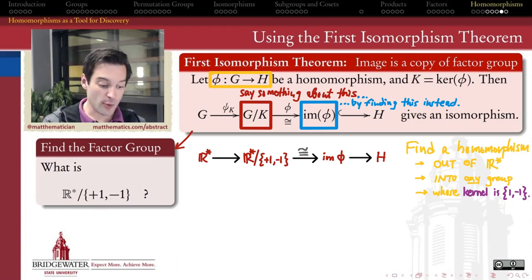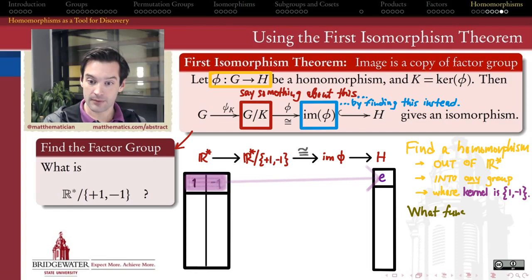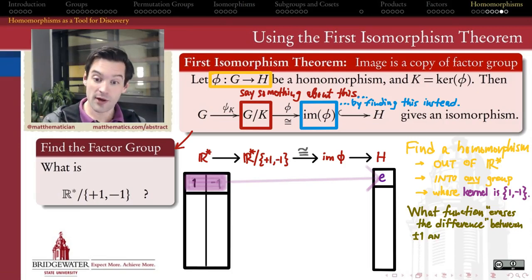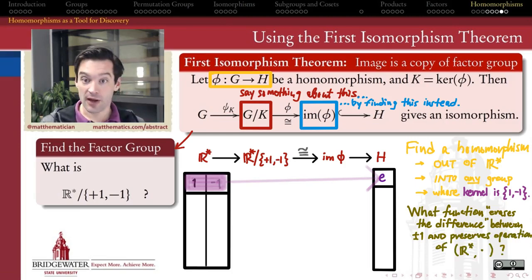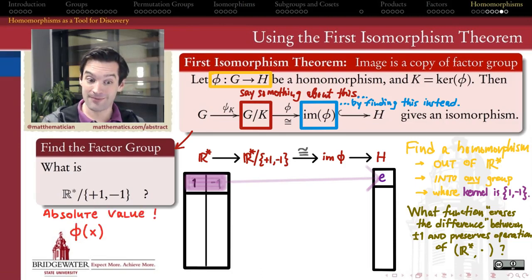How do I find a homomorphism out of the multiplicative group of real numbers that kills exactly the subset {1, -1}? This is almost like a high school algebra question: is there a function that erases the difference between +1 and -1, and which also preserves the operation—meaning phi(xy) must equal phi(x) times phi(y)? And we do know of such a function from high school algebra.